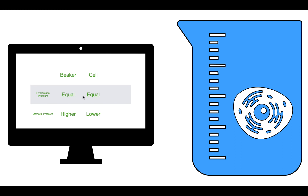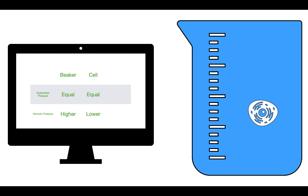In our first scenario, the osmotic pressure is higher in the beaker. This means there is a higher concentration of solute in the beaker than in the cell. Water would move from the cell into the beaker, causing the cell to shrink. Water always moves from an area of low solute concentration to an area of high solute concentration — in other words, from an area of low osmotic pressure to an area of high osmotic pressure.